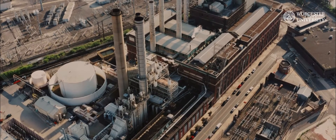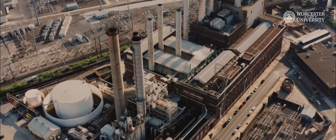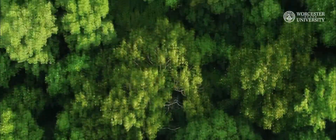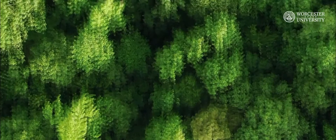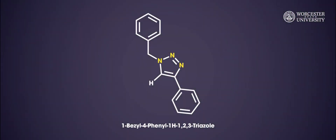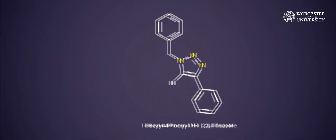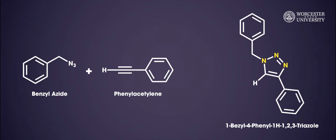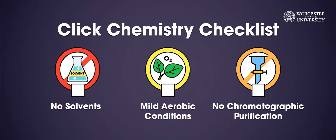The manufacture of pharmaceuticals, polymers, and other synthetic materials often rely on metal catalysts to provide these products in an efficient manner with respect to cost and waste production, which aligns with the concept of Click Chemistry. In this experiment, we will perform the synthesis of 1-benzyl-4-phenyl-1H-1,2,3-triazole. To synthesize triazole, benzyl azide and phenylacetylene are reacted with each other and catalyzed by bromotris-triphenylphosphine copper(I), a metal catalyst. This reaction is considered to be a Click Chemistry transformation, as it consists of no solvent, occurs under mild aerobic conditions, and does not require chromatographic purification.